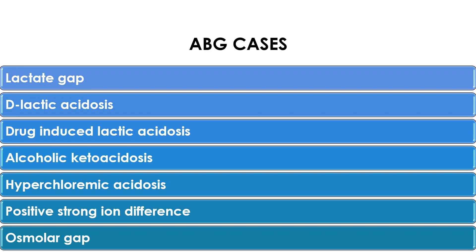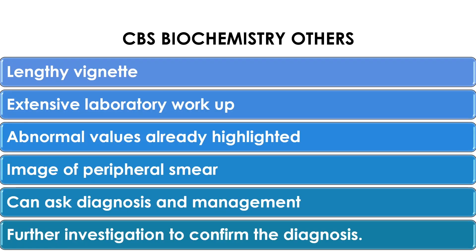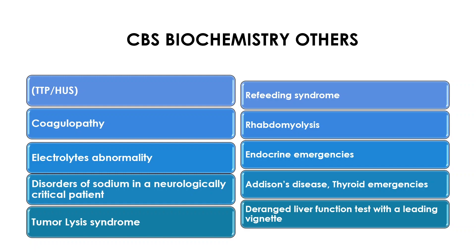Common and interesting ABG scenarios include: lactate gap, D-lactic acidosis, drug-induced lactic acidosis, alcoholic ketoacidosis, hyperchloremic acidosis, positive strong ion difference, and the anion gap. Other CBS biochemistry scenarios involve lengthy vignettes that may include abnormal values along with an image such as a peripheral smear. They can ask about diagnosis, further management, and investigation to confirm diagnosis. Other topics include TTP or HUS, coagulopathy, electrolyte abnormalities, disorders of sodium especially in neurological critical patients, tumor lysis syndrome, refeeding syndrome, rhabdomyolysis, endocrine emergencies — particularly adrenal crisis and thyroid emergencies — and liver function tests with a leading vignette.